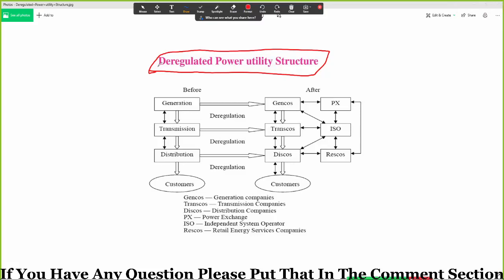So that is the deregulated power structure utility structure. The existence structure can be deregulated to make it better, so that customer can get better service, transmission can be controlled, distribution can be deregulated. This is the brief explanation of the deregulated power system.